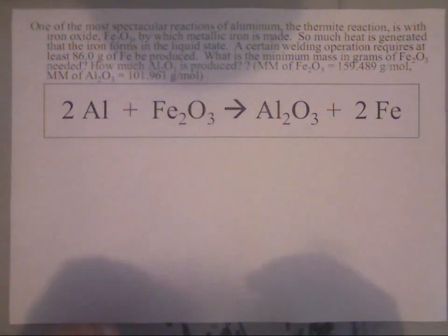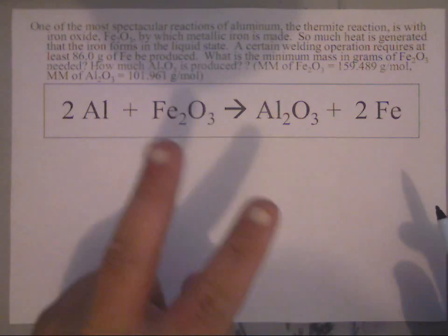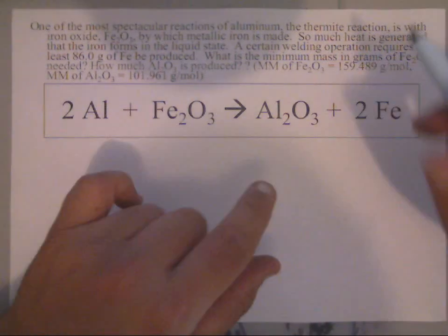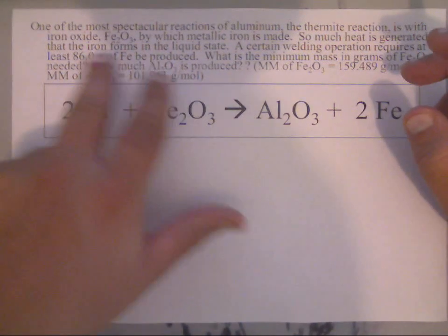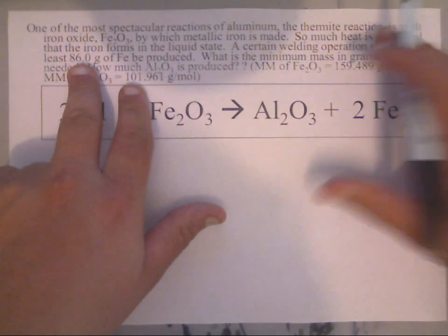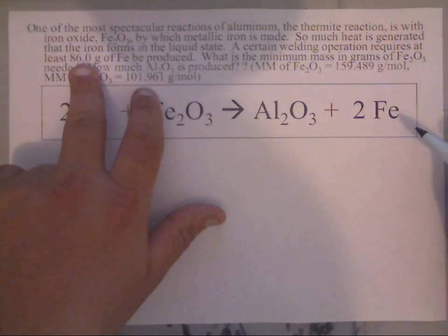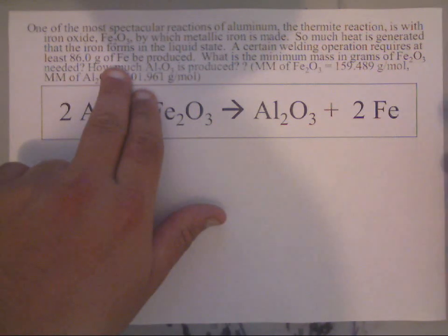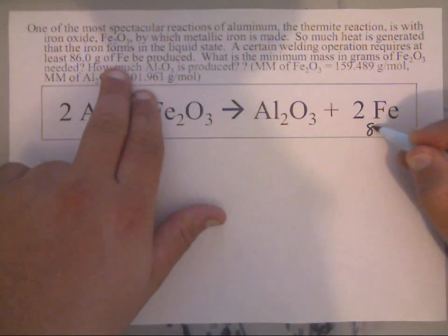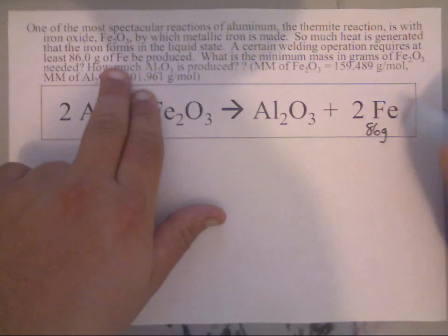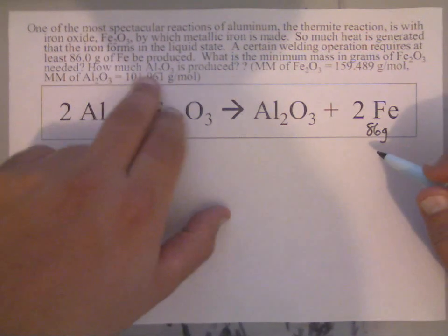Alright guys, here is a very difficult problem. It's another grams to grams, but this time they're asking us a two-part question. They tell us in the very beginning of this thermite reaction that there is 86 grams of iron produced.